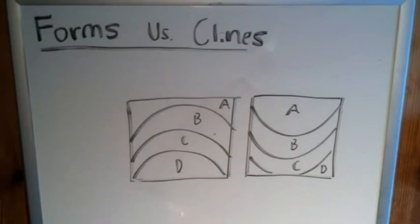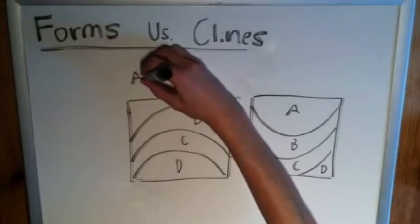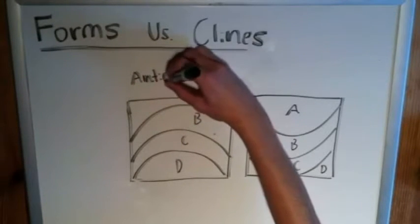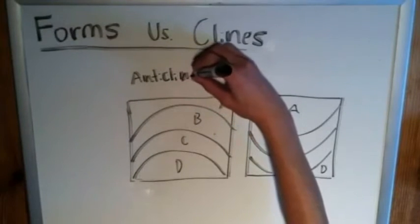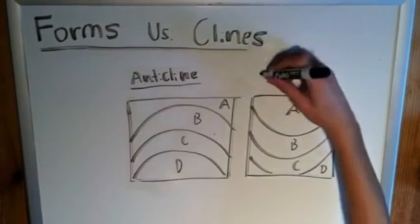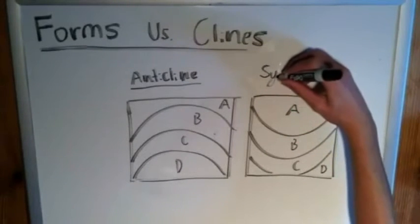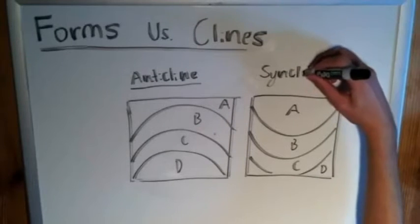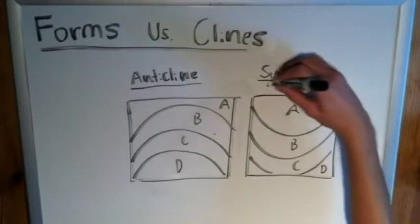An anticline is any fold in which the oldest rock is in the middle of the fold. So this one is an anticline. A syncline, it follows then, is any fold where the youngest rock is in the middle of the fold.